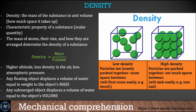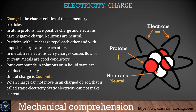Next is density. Density is mass over volume. Two boxes filled with different materials can have different mass or weight because of density differences. Key takeaway: at higher altitude, there is less density in the air and less atmospheric pressure.